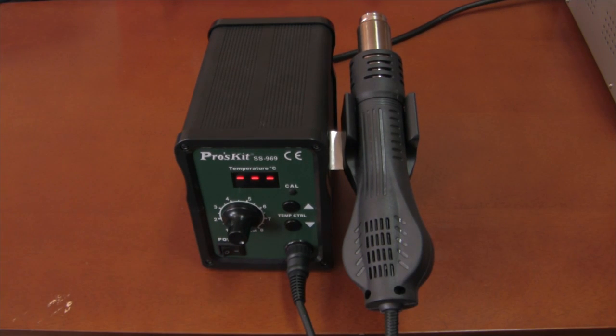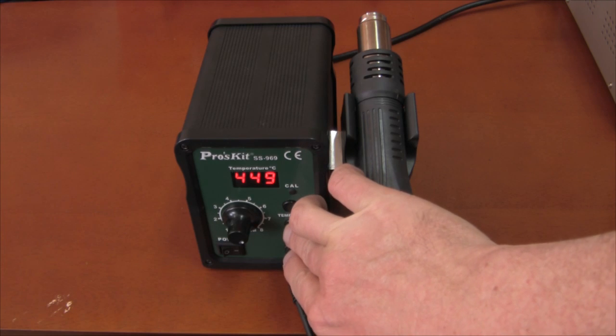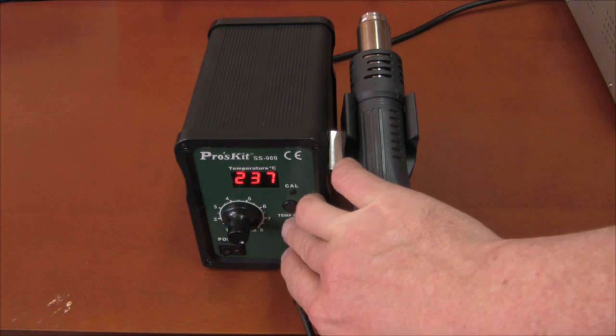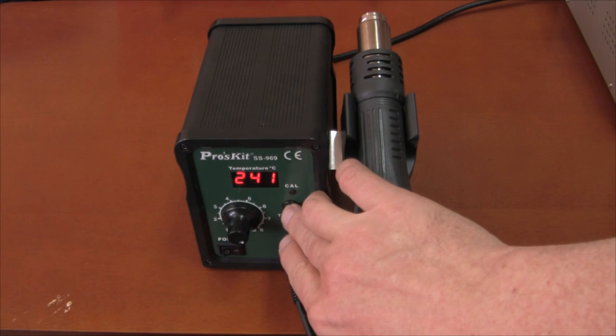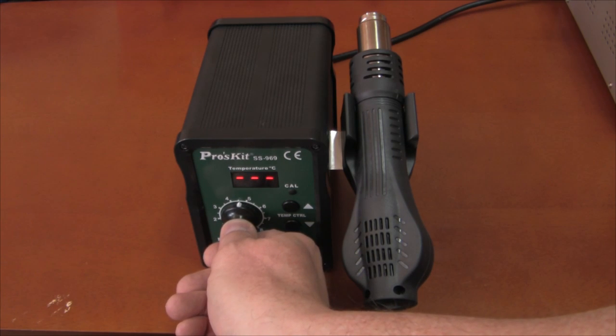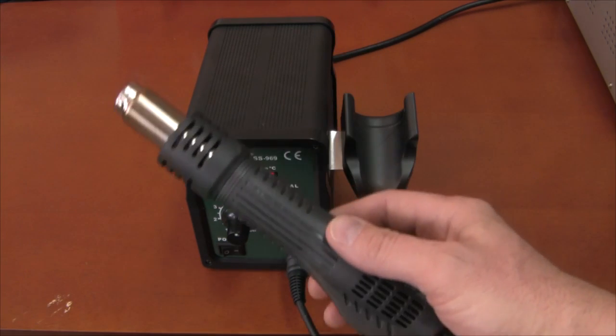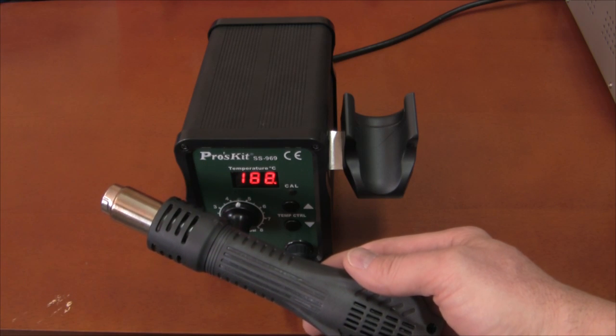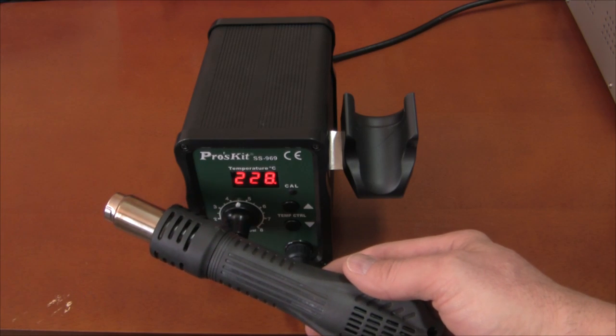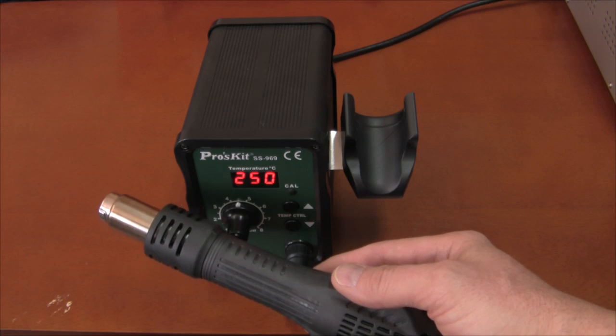We will turn it on here, and you can see that it was originally set for 450 degrees set point. You can adjust the temperature here. Right now it's at the highest. We can set it higher or lower here. Let's set it for around 250 just so you can see when I start this up what it looks like. We have a fan speed control here. We'll put it on medium. Let's take the wand out of the holder and you will see that the temperature is rising very quickly.